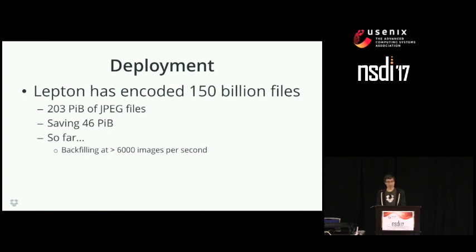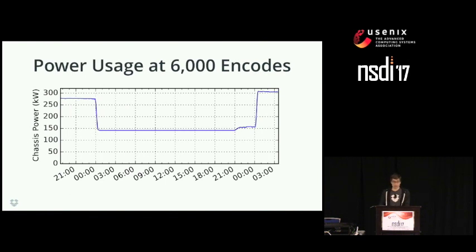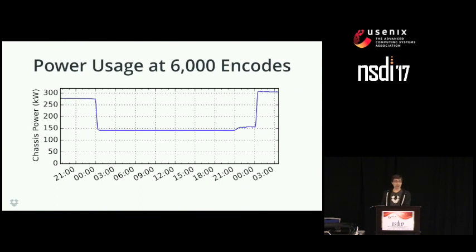We've been running Lepton in production for about a year now. We've encoded more than 200 petabytes of JPEGs, saving more than 46 petabytes. We're re-encoding images from zlib to Lepton at a rate of 6,000 per second using just spare compute cycles. Running on a Xeon E5-2650, we can sustain about 6,000 encodes per second at 300 kilowatts. One kilowatt hour can be traded for about 72,000 encodes, saving 24 gigs of storage — so on durable storage like S3, it can pay for itself in just under a week.